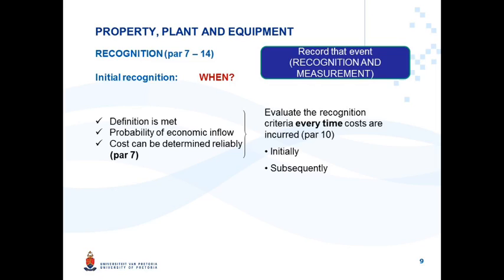From paragraph 10: every time costs associated with property, plant and equipment are incurred, those costs must be evaluated against the recognition criteria before they can be recognized as property, plant and equipment. This introduces the new concepts of initial recognition and subsequent recognition — every time, initially and subsequently, that you incur costs associated with property, plant and equipment, it has to be evaluated against this recognition criteria.